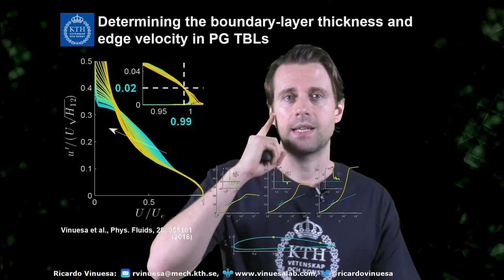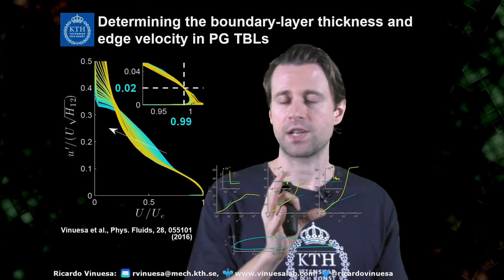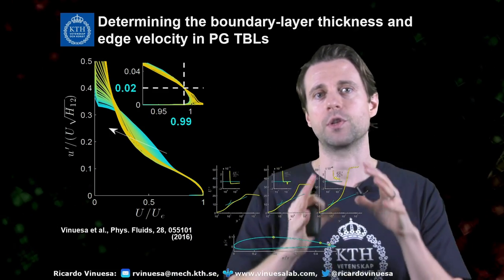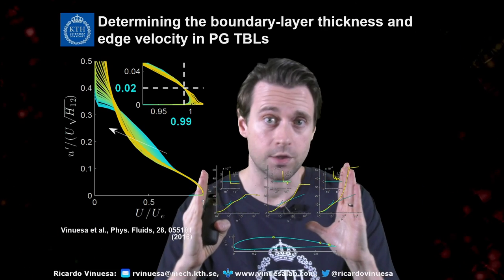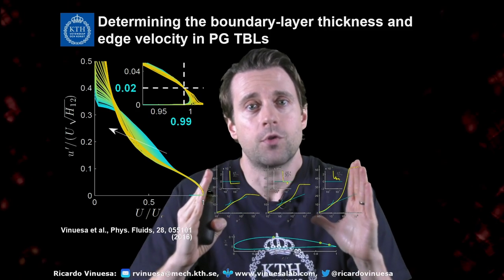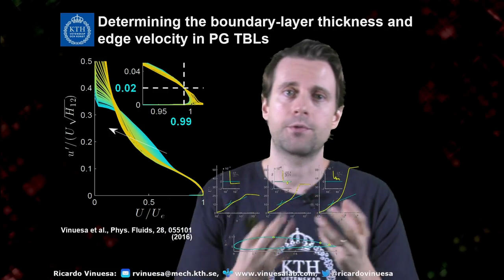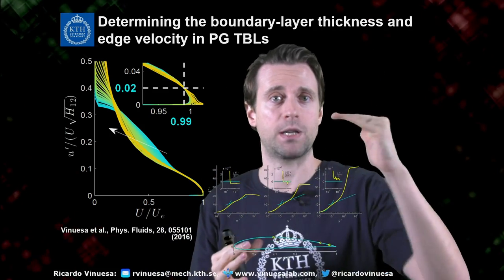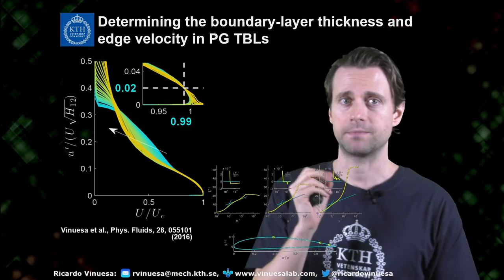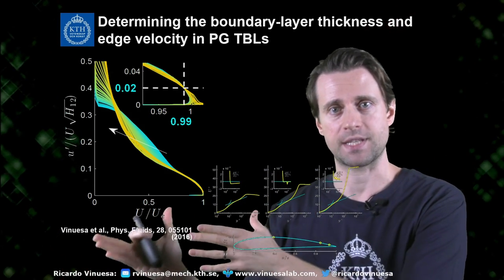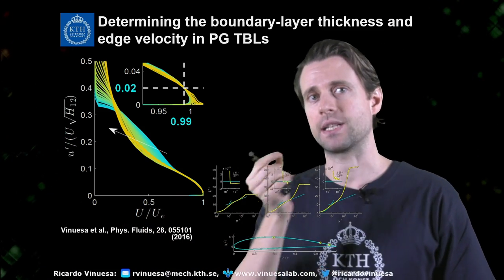A key challenge in studying pressure gradient turbulent boundary layers is determining the boundary layer edge. For different pressure gradient intensities on the suction side, the mean flow free stream is sometimes decreasing and sometimes increasing. Therefore, typical criteria based on the free stream velocity cannot be used, since there is no well-defined free stream. We developed a methodology relying on diagnostic scaling, documented in Vinuesa et al. in Physics of Fluids.